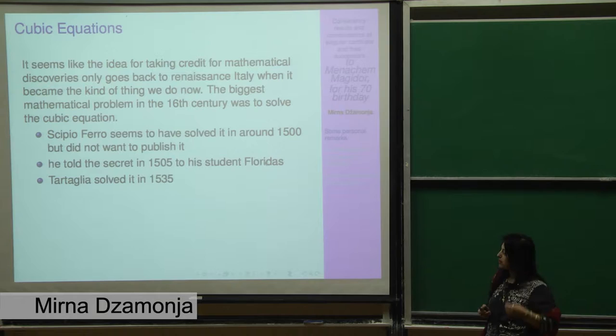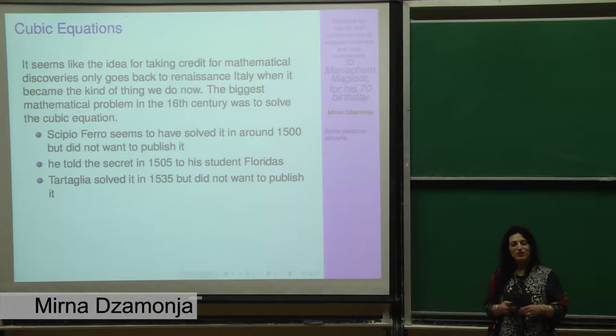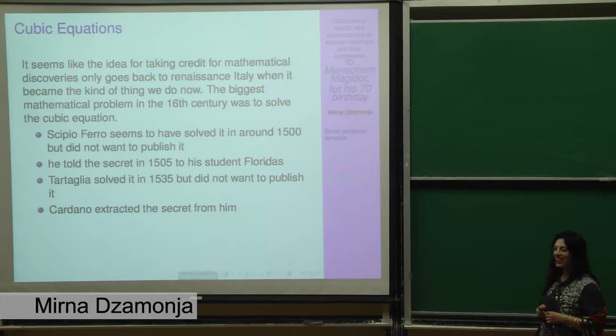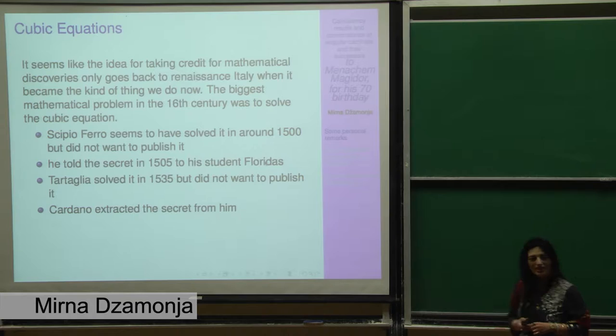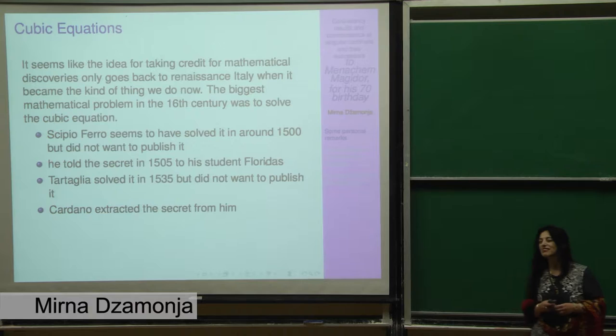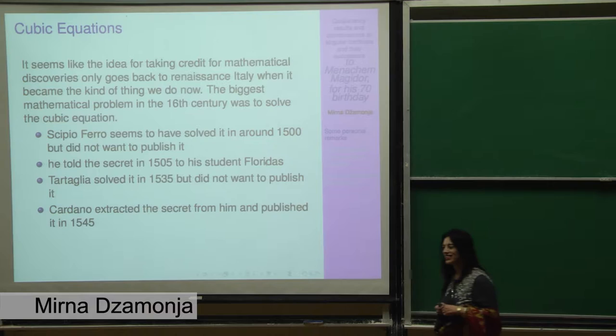Fioridas made good use of it, but it wasn't clear what he actually knew. Tartaglia solved the problem in 1535. He really solved it, but he didn't want to publish it. After some years, Cardano - you have heard of Cardano's formulas from the cubics - extracted the secret from Tartaglia by giving all kinds of promises that he will not tell anybody, but that his scientific curiosity was such he had to know the secret. And then he published it under his own name in 1545.